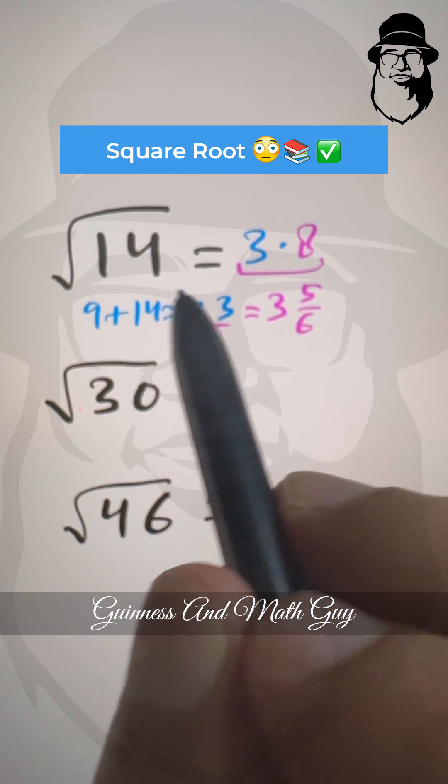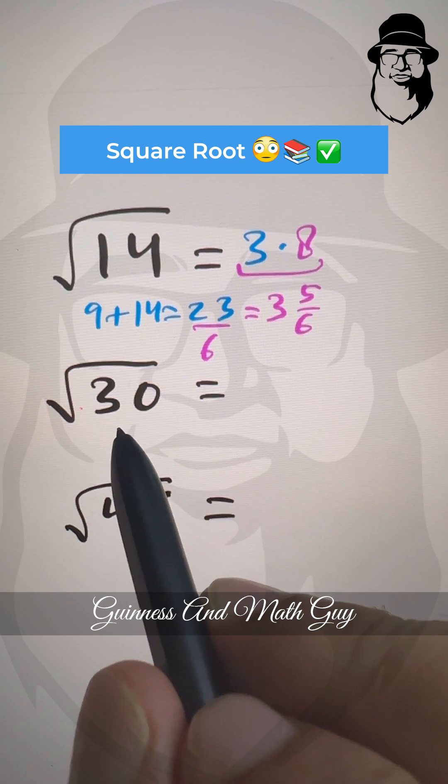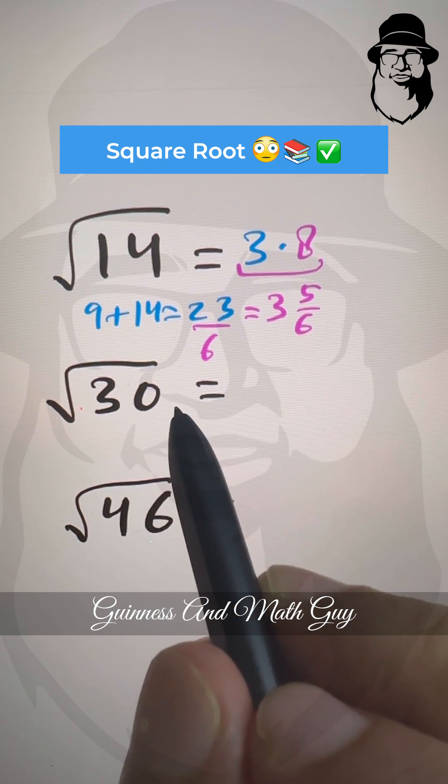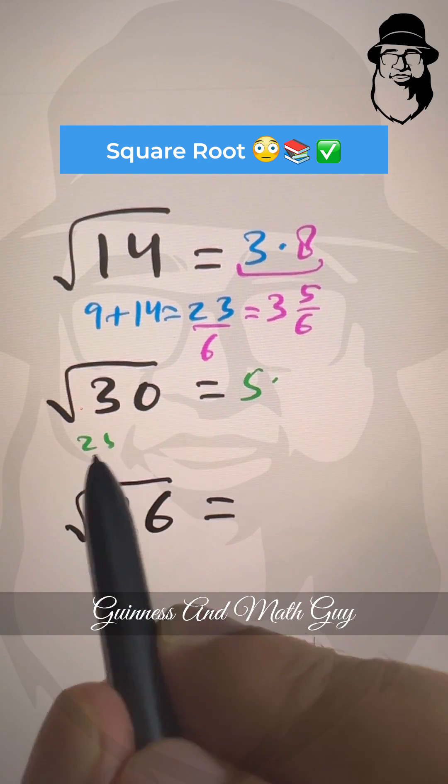Let's do this one. 5 squared is 25, and 6 squared is 36. So we'll take 5, 5 point something will be the answer. Here, 25, the largest perfect square.